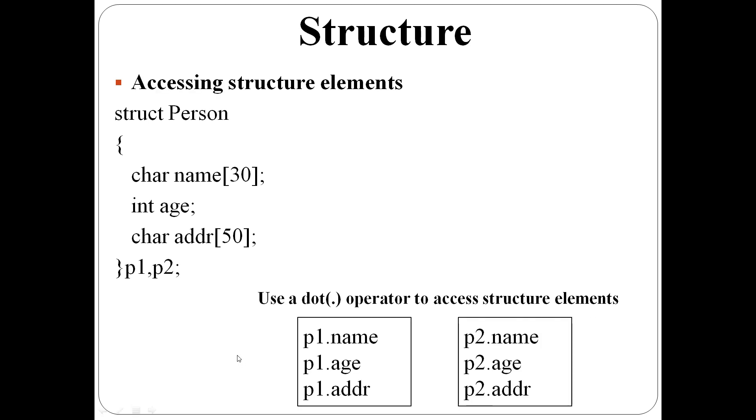How to access structure elements? We can use the dot operator to access structure elements. p1.name means p1's name, p1.age means p1's age and so on. Similarly, p2.name, p2.age and p2.addr.